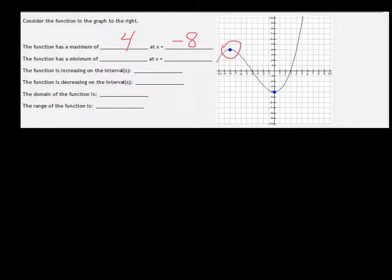Likewise, we have a local minimum at 0, negative 4. So the minimum is actually negative 4 and it's at x equals 0.